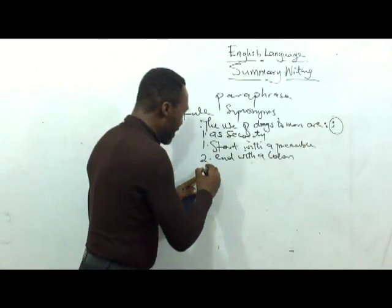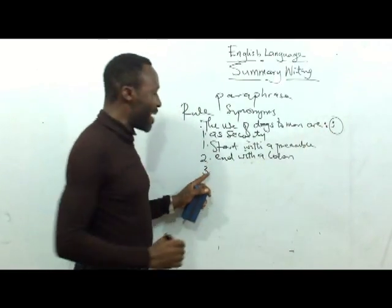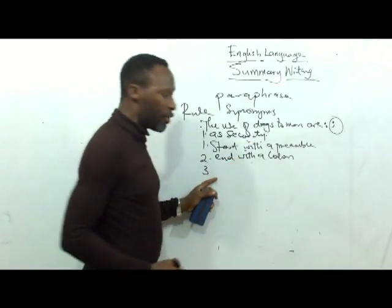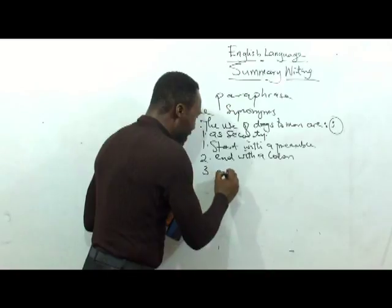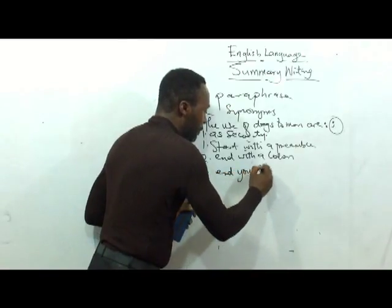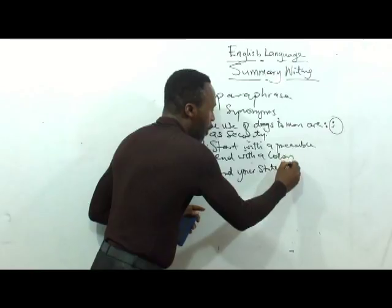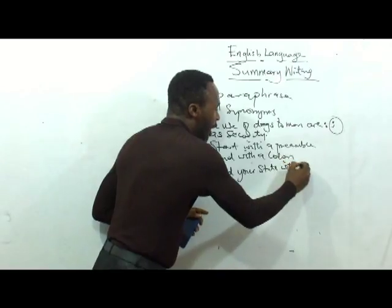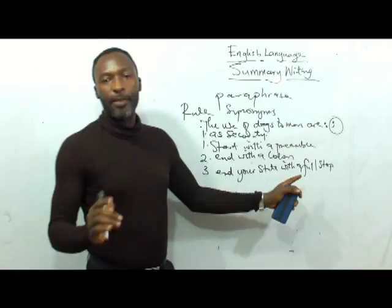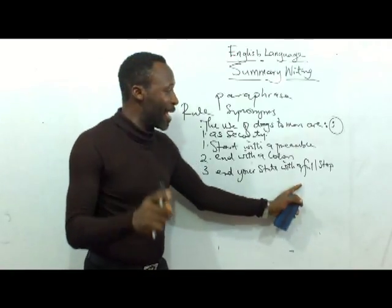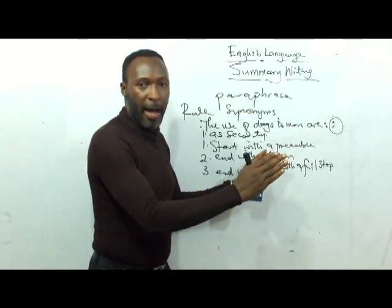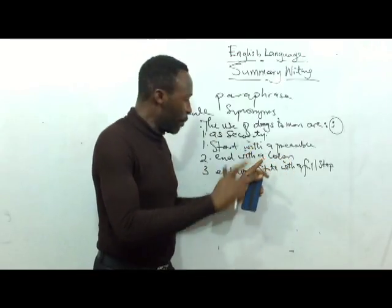The next thing you do is at the end of every statement you write, put a full stop. Rule three is: end your statement with a full stop. This shows that that is the end of that summary answer for that line, and then you go to the next one.